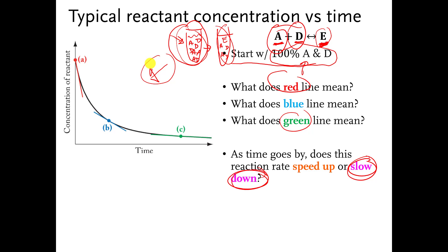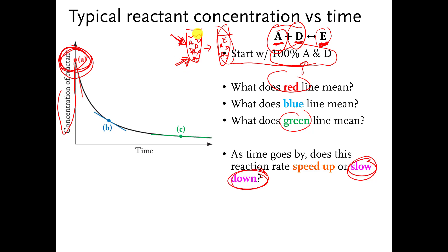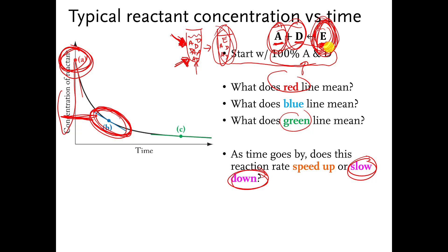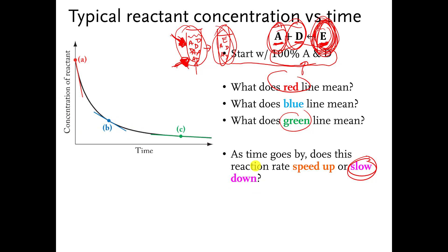One way of thinking about this: when the concentration is high at the beginning of the reaction, the A's and D's are crowded together. The A's and D's need to bump into each other in order to turn into E. If they're really crowded together, they're more likely to bump into each other. But as time goes by, they start to disappear — they're already turning into E's. So the chances of them bumping into each other become lower, and E doesn't form quite as fast. Over time, even lower concentration means they're even less likely to bump into each other, so the reaction slows down.